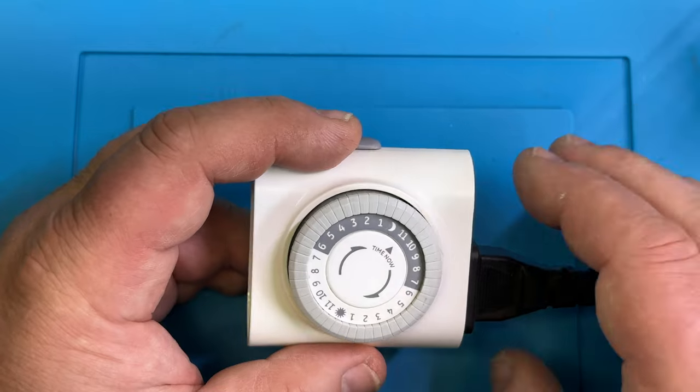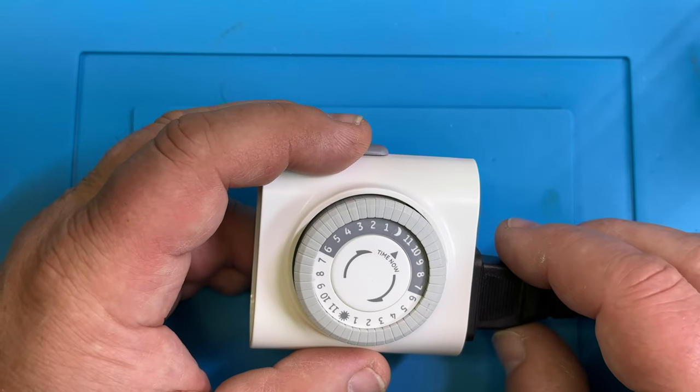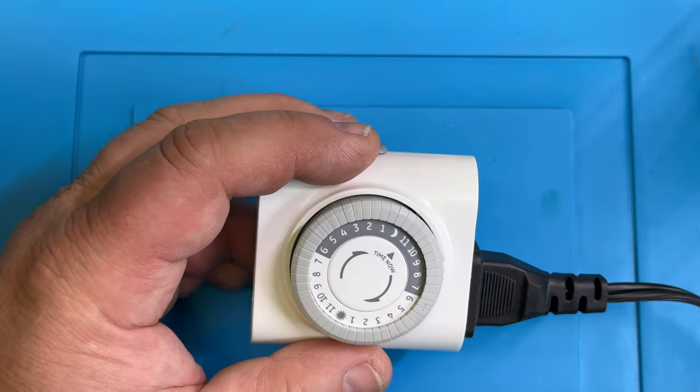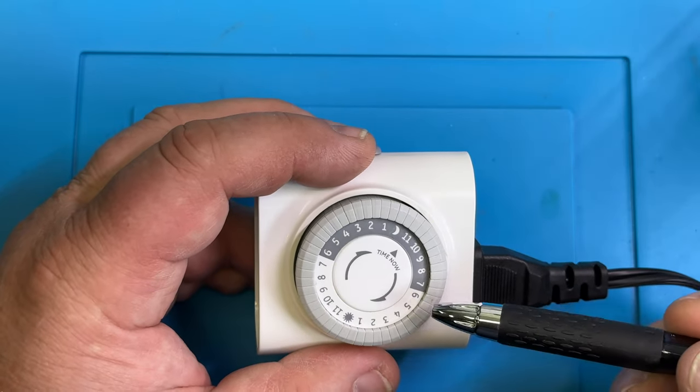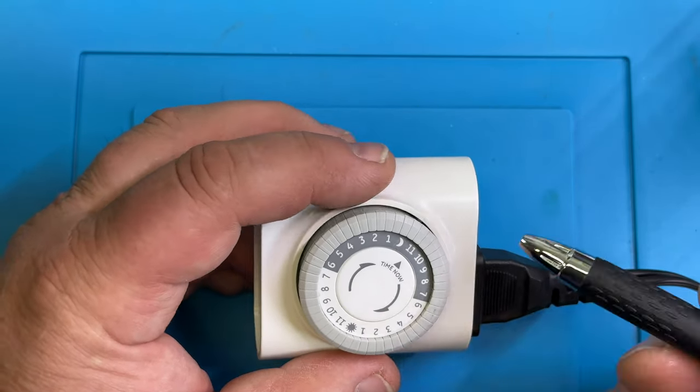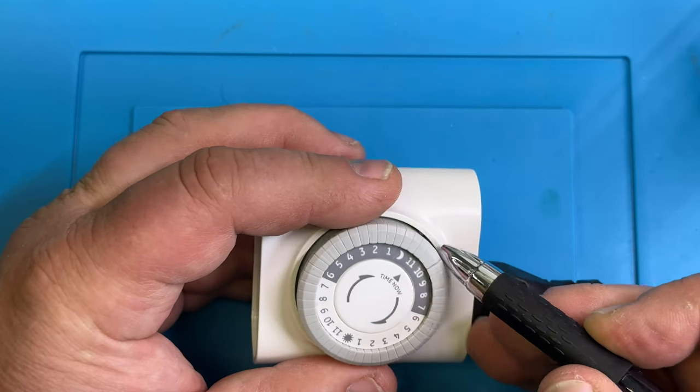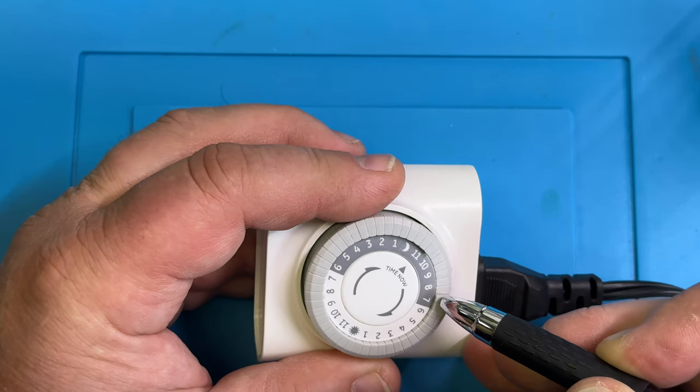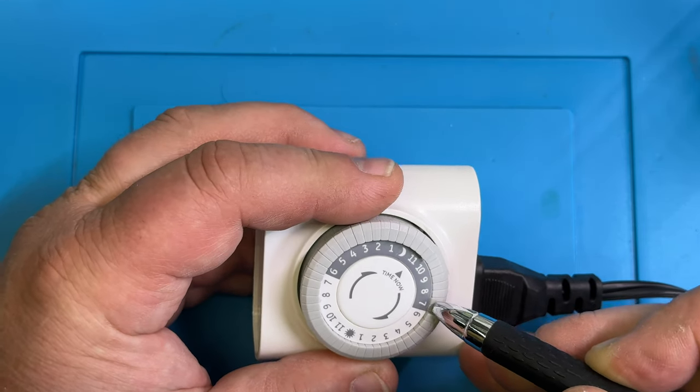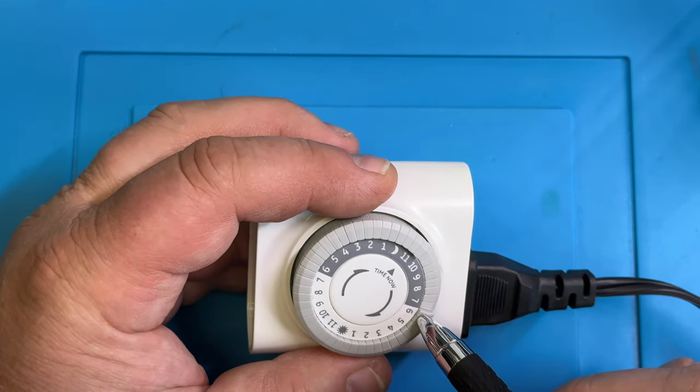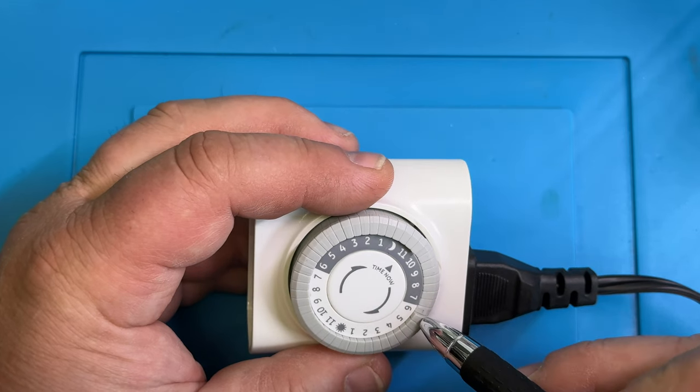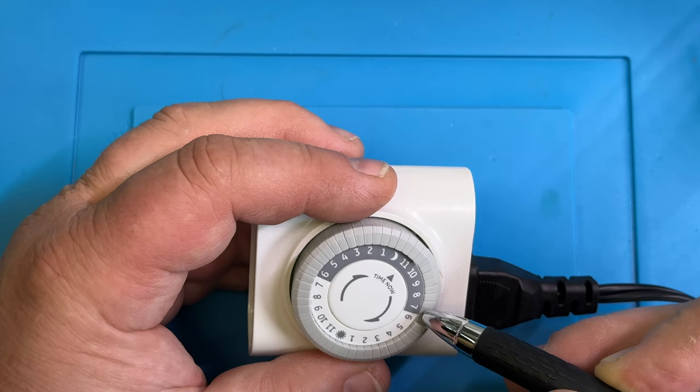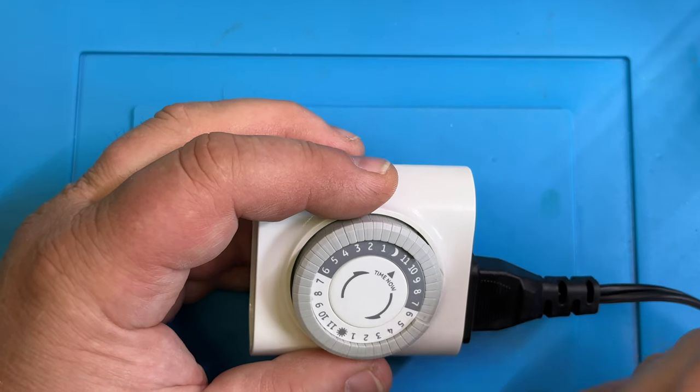So let's do an example. If you want to turn our device on from 6 pm to 10 pm, we have here the 6 pm and there the 10 pm. We would go in here and select all those pins in between those two times. So now at 6 pm it will turn on all the way up to 10 pm.